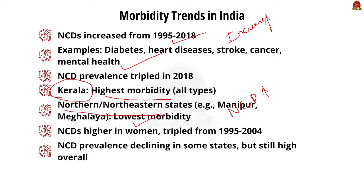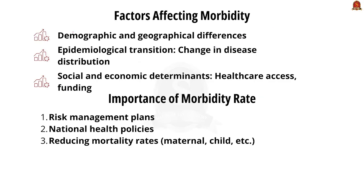The northern and northeastern states, especially Manipur and Meghalaya, have the lowest morbidity rates. Non-communicable disease rates are higher in women, and this rate tripled between 1995 and 2004. Even though the prevalence of NCDs has declined in several states, the overall number remains large. The prevalence of infectious and communicable diseases has also nearly doubled in the last decade.